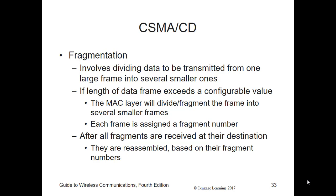The second method of reducing collisions is fragmentation — dividing the data to be transmitted from one large frame into several smaller ones. Sending many smaller frames instead of one large frame reduces the amount of time the wireless medium is used to transmit each individual frame. In fragmentation, if the length of a data frame exceeds a configurable value, the MAC layer will divide that frame into several smaller frames, each given a fragment number starting at 0.